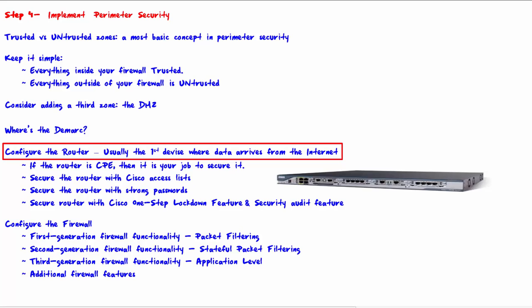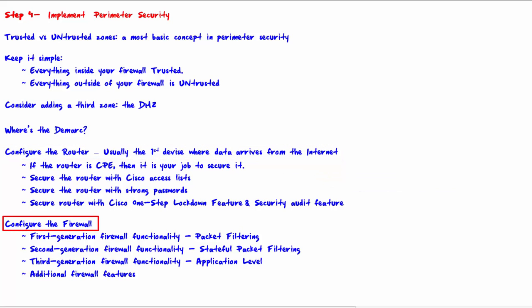Lastly, we will configure the firewall. Traffic that is permitted to pass the router next hits the firewall. A firewall is a much more granular and powerful device for controlling traffic in and out than your router. First-generation firewall functionality is packet filtering, which is essentially the same as the functionality you get with Cisco standard and extended access lists. Packet filtering occurs at layers one, two, and three of the OSI reference model.